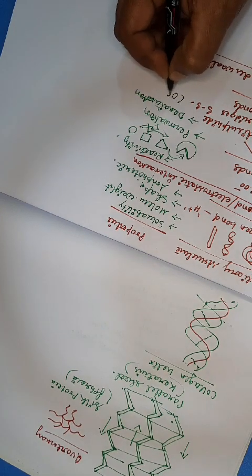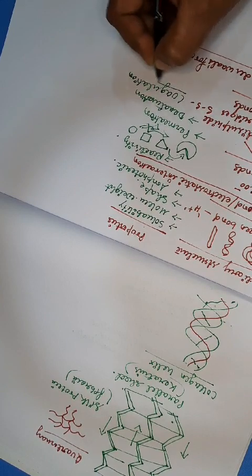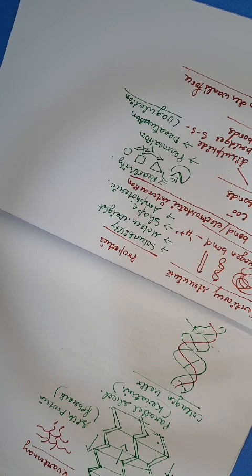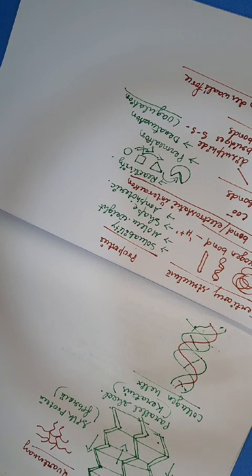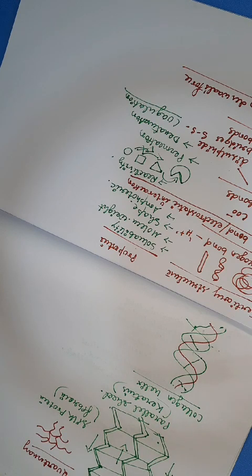The last topic is coagulation of proteins. A coagulum refers to a semi-solid viscous precipitate of a protein. Irreversible denaturation results in coagulation, meaning once coagulation occurs, you cannot renature it. Coagulation is optimum and requires the lowest temperature at the isoelectric pH. Albumin and globulin are coagulable proteins, and heat coagulation is commonly used to detect the presence of albumin in urine. This concludes our discussion of the different protein structures, their stabilizing forces, and their biological importance.